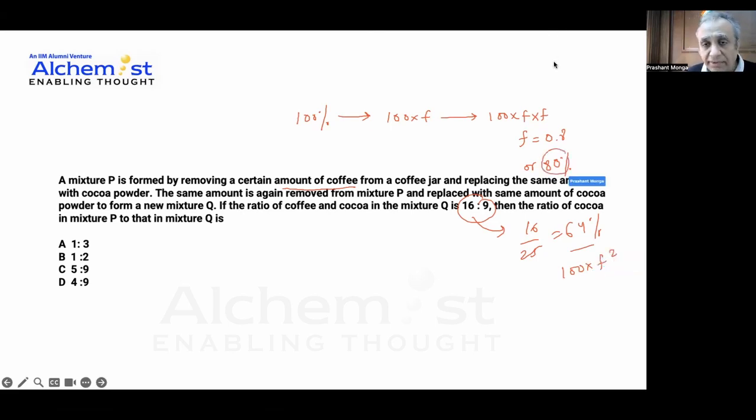Now since we know this is 80%, coffee here would be 80% and coffee here is 64%. So cocoa here was 36% and cocoa here is 20%. So the ratio of cocoa in mixture P to Q would be 20 is to 36.